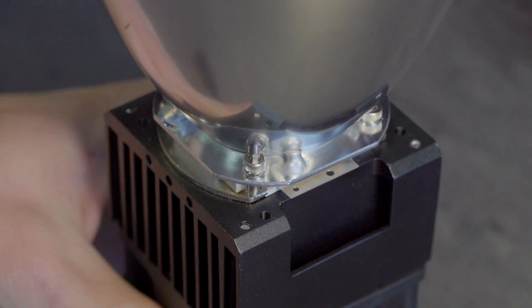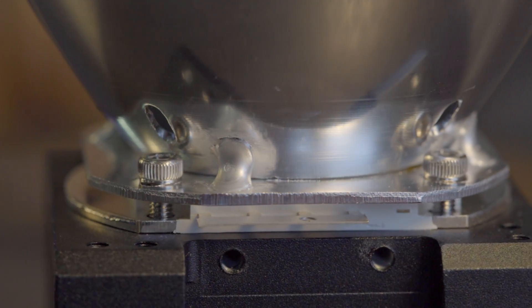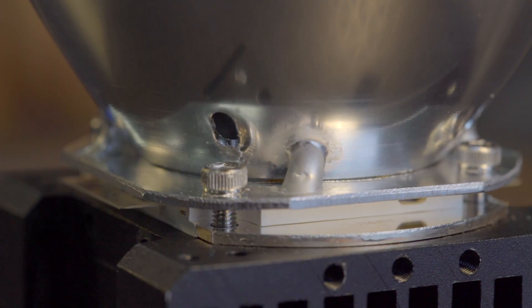Then sequentially tighten each screw two turns at a time until all four screws are tight. Tightening one screw at a time will cause the screw head to bump into the parabolic cone and bind up the screw.